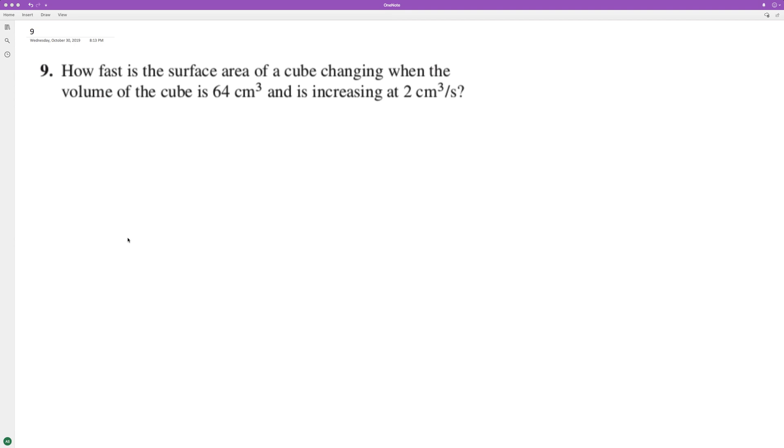How fast is the surface area of a cube changing when the volume of the cube is 64 centimeters cubed and is increasing at a rate of 2 centimeters cubed per second?